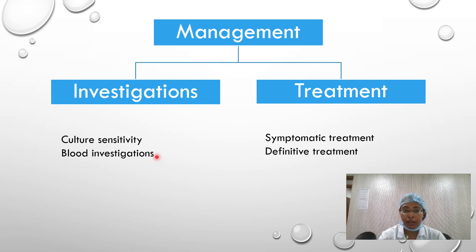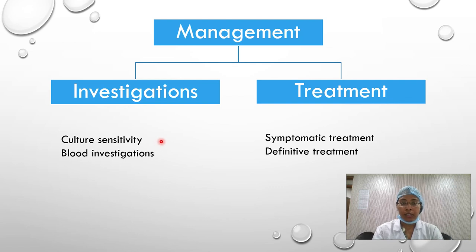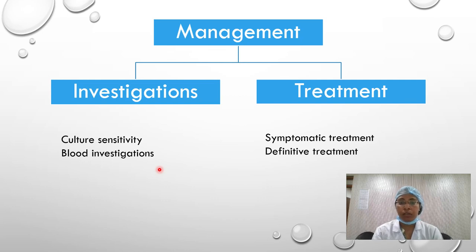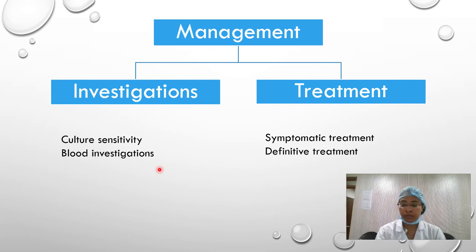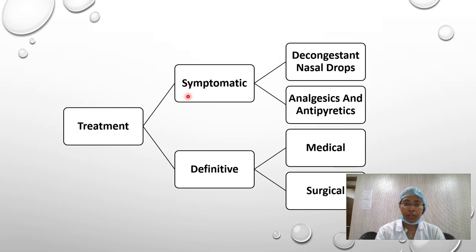Regarding management, investigations include culture sensitivity and blood investigations. If ear discharge is present, culture sensitivity determines which antibiotic or antiviral to use. Blood investigations indicate atopic or acute bacterial conditions — leukocytosis suggests acute bacterial infection, and elevated immunoglobulins or eosinophils suggest an allergic condition. Treatment is symptomatic or definitive: analgesics relieve earache, and nasal decongestant drops address the common risk factor of upper respiratory tract infection.